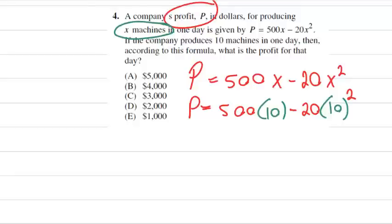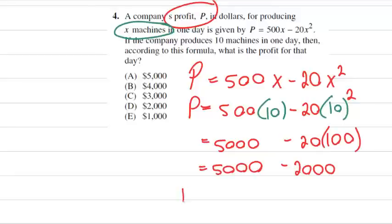500 times 10 minus 20 times 10 squared. 10 squared is 100. 500 times 10 is 5,000. And 20 times 100 is 2,000. 5,000 minus 2,000. Therefore, P equals 3,000. So our answer would be C.